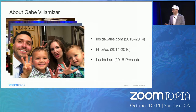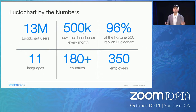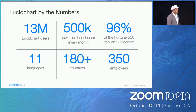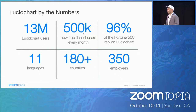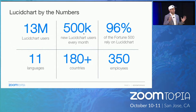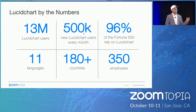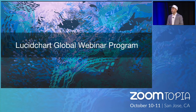Some numbers about Lucidchart so you have more context on who we are: we've been around for eight years and have about 13 million users worldwide. We're a cloud-based diagram and flowchart platform — a lot of people know us as the lift-and-shift alternative to Microsoft Visio. We get about 500,000 registrations per month, and our founders and executive team have built an incredible machine of registration that gives us the opportunity to test a lot of cool things, including webinars.